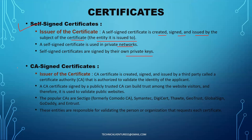Then we have CA-signed certificates, which we can also call trusted certificates. The issuer here is a Certificate Authority (CA). A CA certificate is created, signed, and issued by a third party called a certificate authority, which is authorized to validate the identity of the applicant.